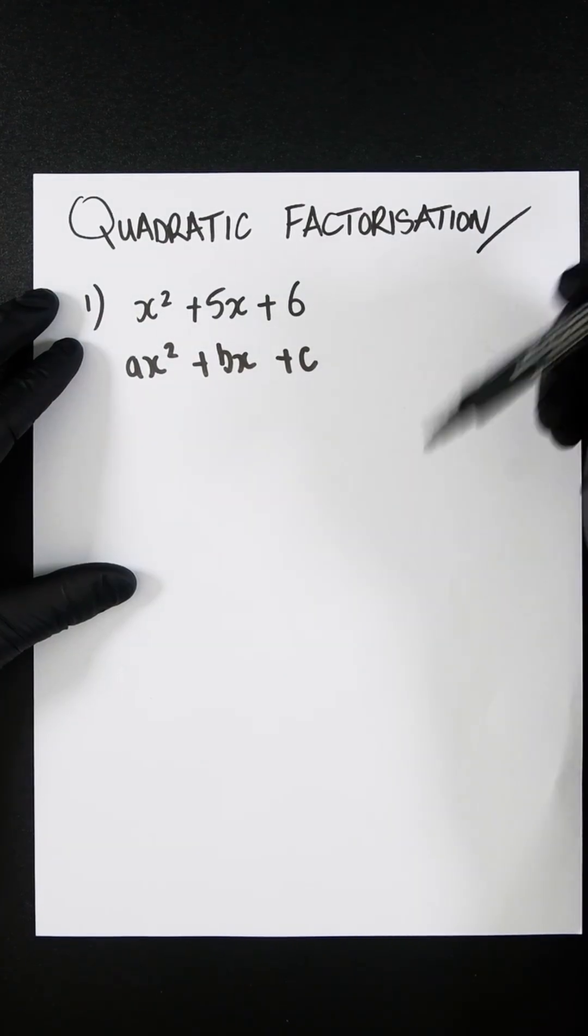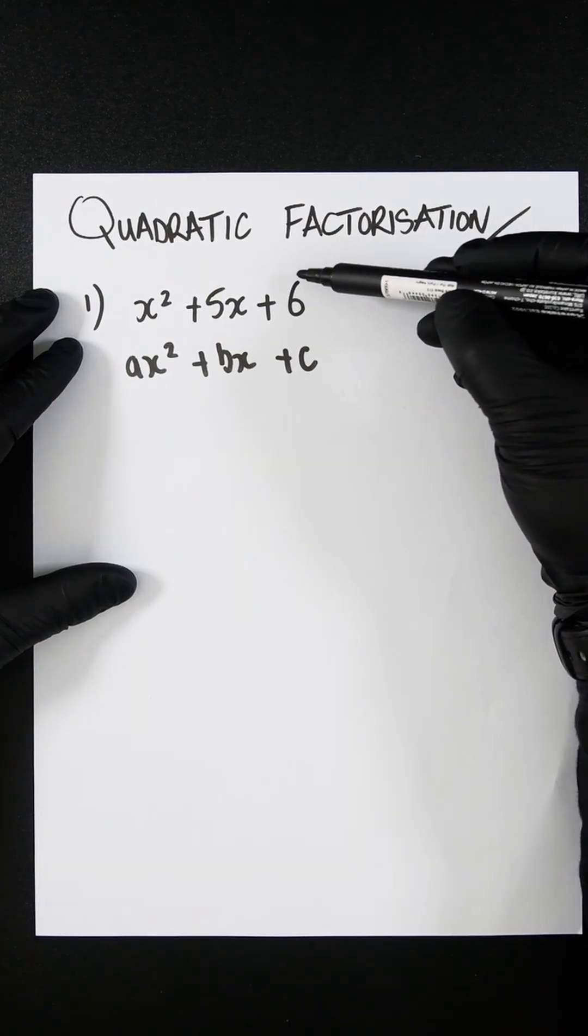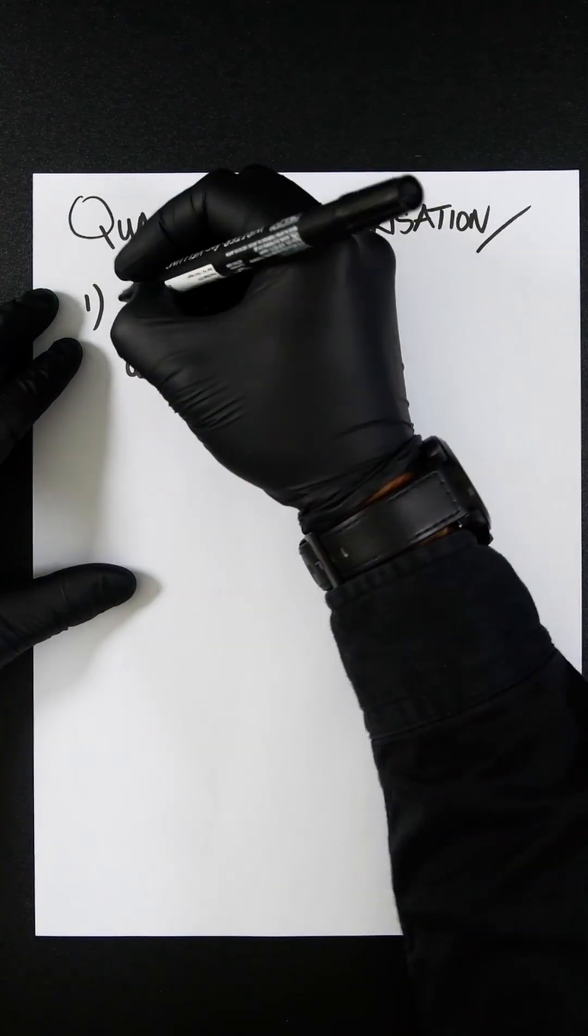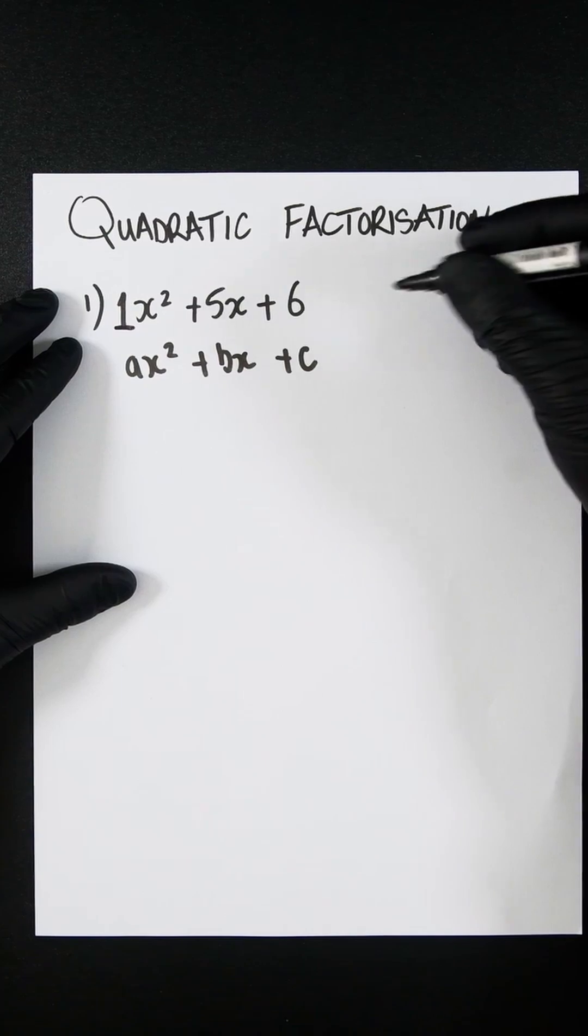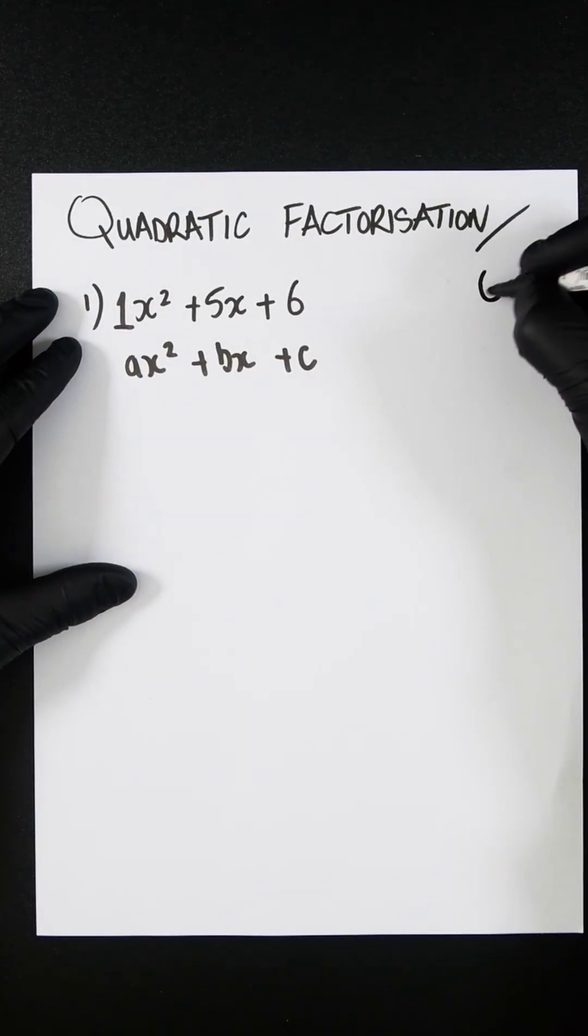The first thing you do is multiply the c term with the a term. So in this equation, a is 1, so 6 times 1 is 6.